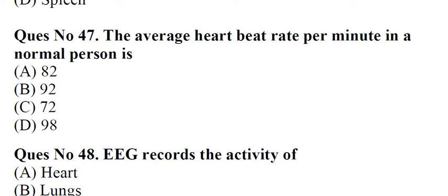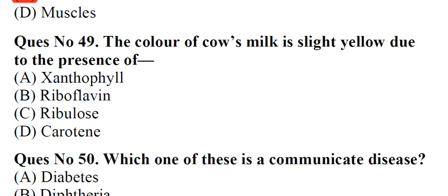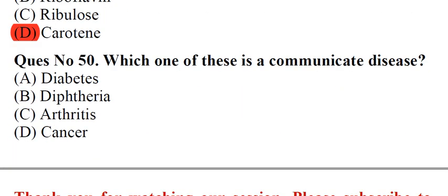Question number 47: The average heart beat rate per minute in a normal person is A. 82 B. 92 C. 72 D. 98. Answer: C. 72. Question number 48: EEG records the activity of A. Heart B. Lungs C. Brain D. Muscles. Answer: C. Brain. Question number 49: The color of cow's milk is slight yellow due to the presence of A. Xanthophyll B. Riboflavin C. Ribulose D. Carotene. Answer: D. Carotene. Question number 50: Which one of these is a communicable disease? A. Diabetes B. Diphtheria C. Arthritis D. Cancer. Answer: B. Diphtheria.